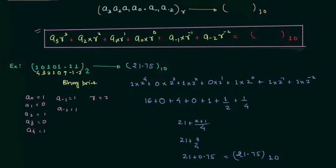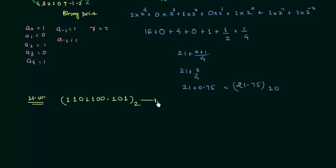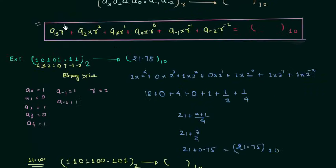Now there is one homework problem for you. The binary number is 1100.101 and you have to find the decimal equivalent of this binary number. You have to follow the same rule and you will easily find the decimal equivalent. This is all for this presentation.